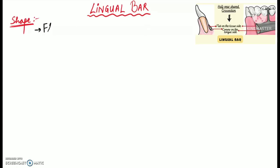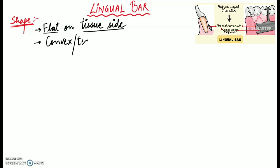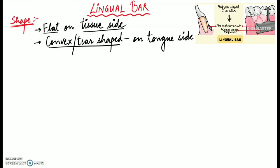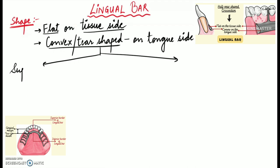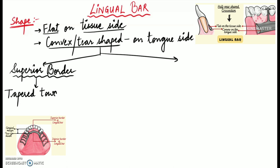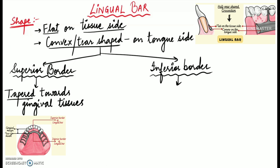Lingual bar is flat on the tissue side, whereas it is convex or teardrop shaped on the tongue side, as we can clearly see in this diagram. The superior border of this mandibular major connector should be tapered towards the gingival tissues, as shown in the diagram.